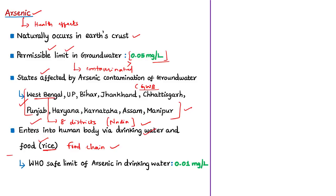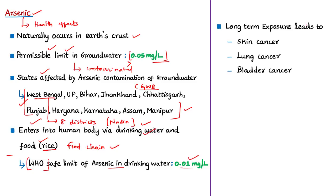The safe limit of arsenic in drinking water is 0.01 milligrams per liter as per the standards of the World Health Organization. Long-term exposure to arsenic-contaminated drinking water and food is said to lead to skin cancer, lung cancer, and bladder cancer in human beings, and also amounts to poisoning of food.